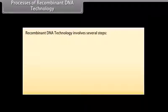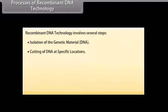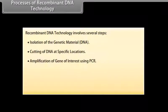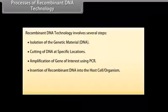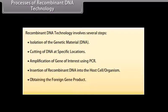Processes of recombinant DNA technology. Recombinant DNA technology involves several steps. Isolation of the genetic material. Cutting of DNA at specific locations. Amplification of gene of interest using PCR. Insertion of recombinant DNA into the host cell organism. Obtaining the foreign gene product. Downstream processing.